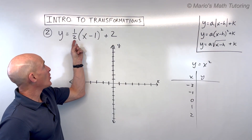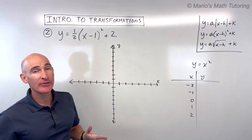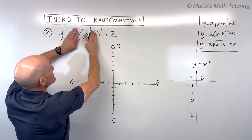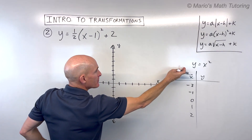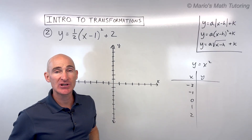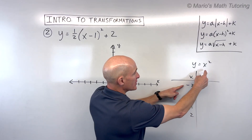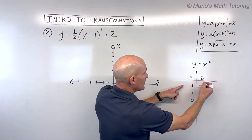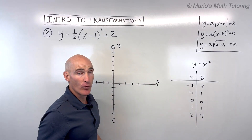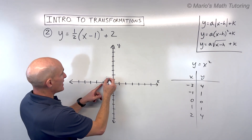Now let's graph y equals one half times the quantity x minus one squared plus two. What does that graph look like using transformations? Again, if you cover up some of these extra numbers, you're left with the parent function y equals x squared — a parabola, a U-shaped graph. Good points to pick are negative two, negative one, zero, one, and two. Squaring those gives four, one, zero, one, and four. Let's plot that parent function to visualize.